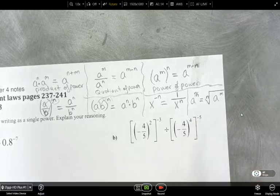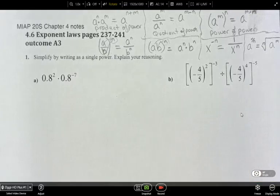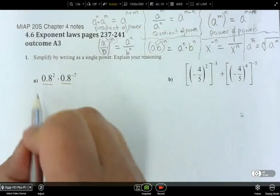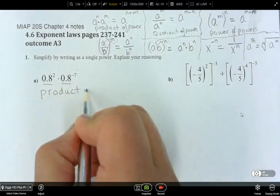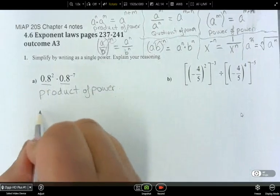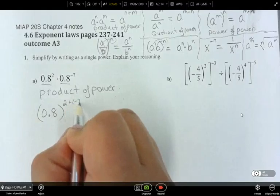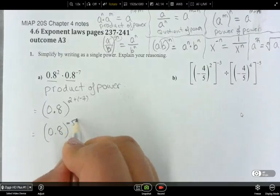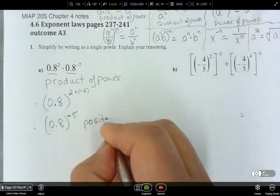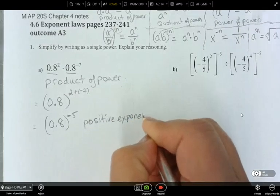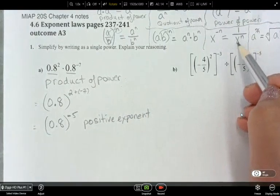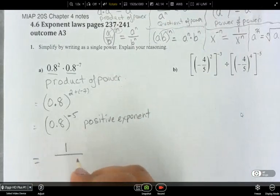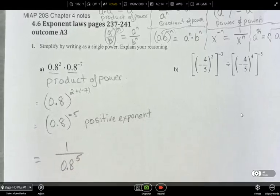Let's have a look at these — simplify by writing as a single power and explain your reasoning, meaning tell me which exponent law you're using. Here we've got the same base, so we're going to use the product of power law and add the exponents: 2 plus negative 7. That equals 0.8 to the power of negative 5. Now, can we please write it with a positive exponent? We write 1 over 0.8 to the power of 5.